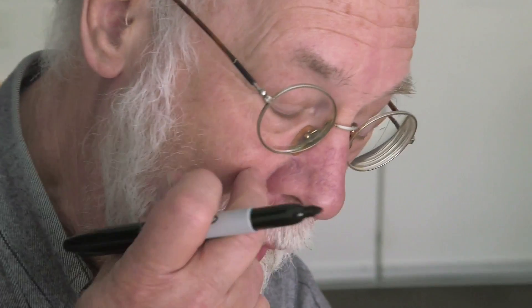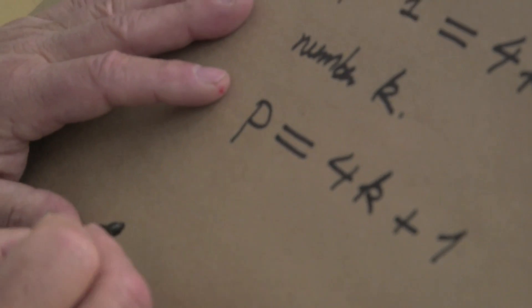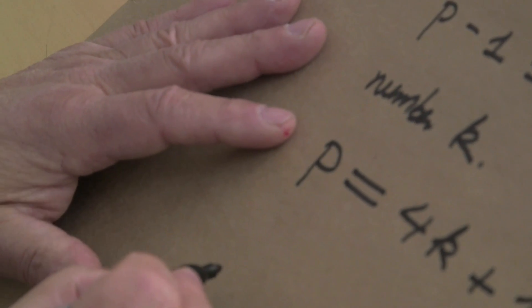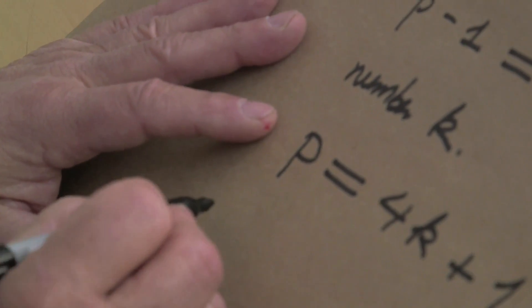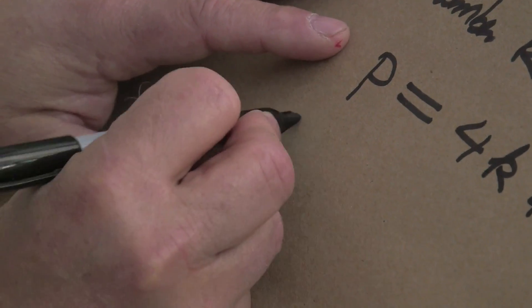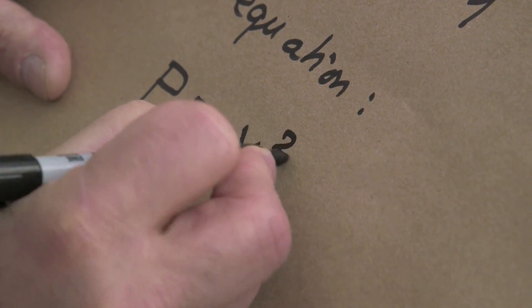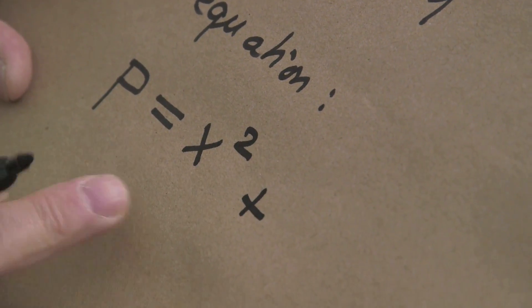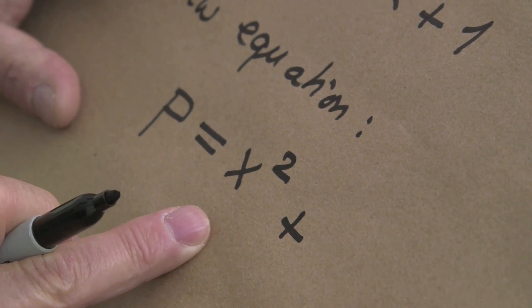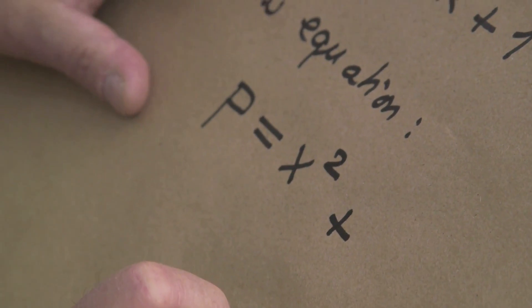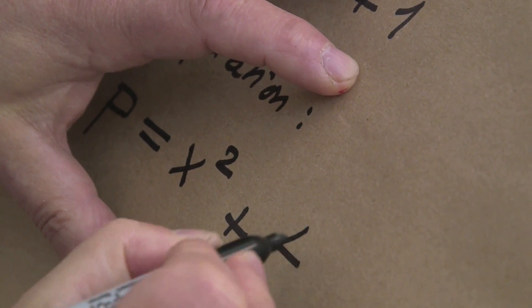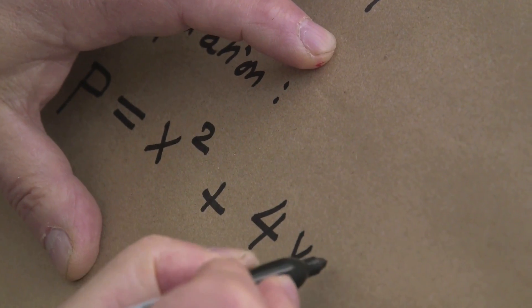And now comes something which, even for me as a professional mathematician, is surprising. Namely, Zagier looks at a different equation which looks at first glance more complicated. So, new equation: p equals x squared plus, before we looked at x squared plus y squared, but now we look at the new equation 4yz.